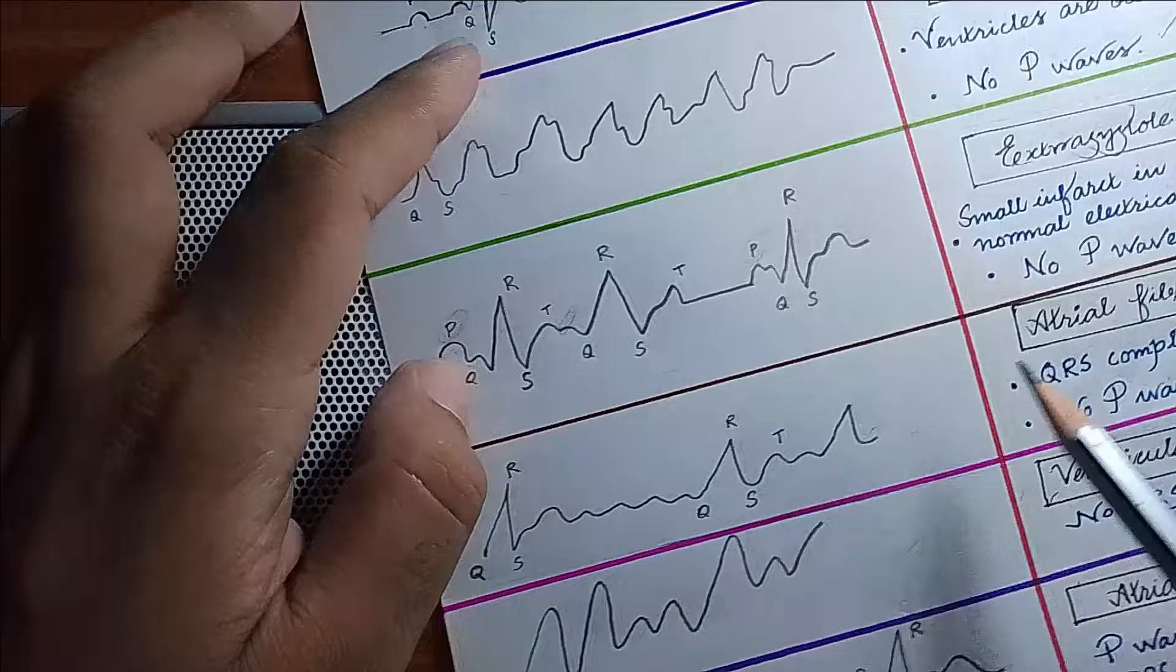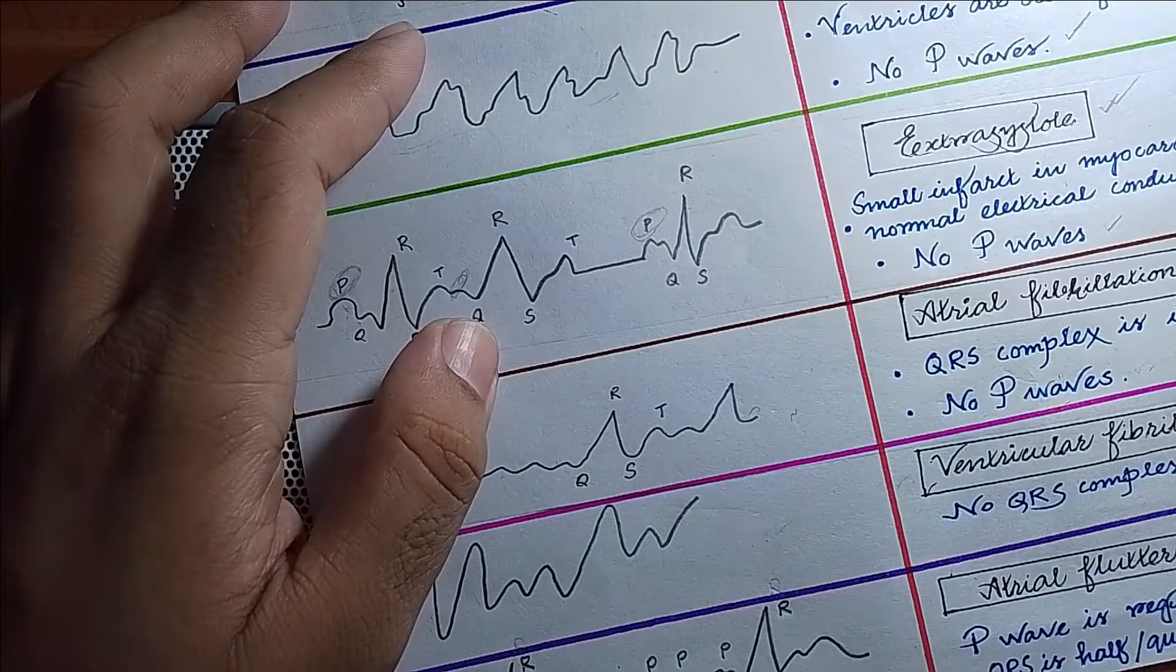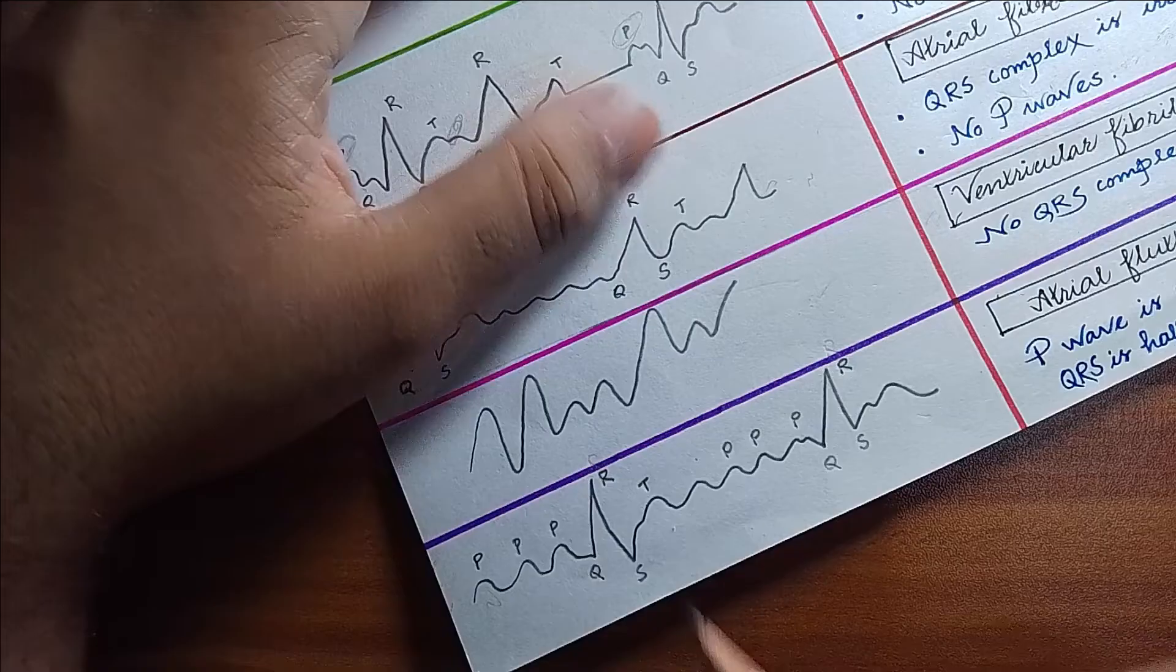The next ECG pattern, you can see there is no QRS complex, so it is most likely due to ventricular fibrillation. The next ECG you can see...